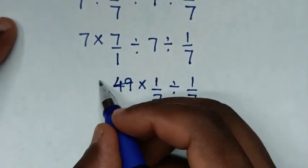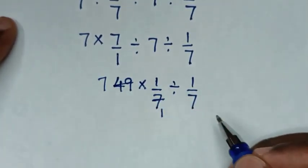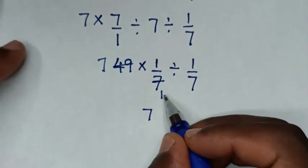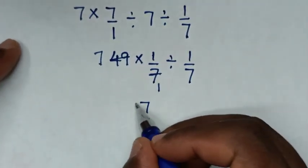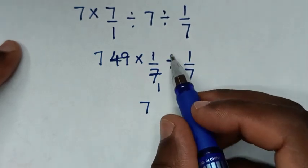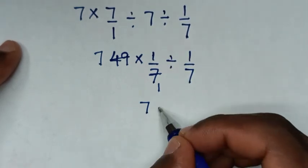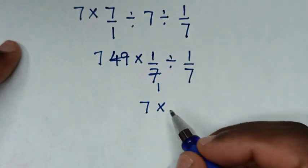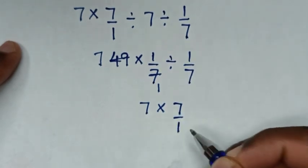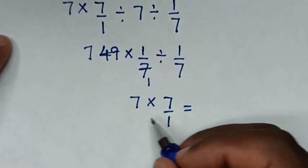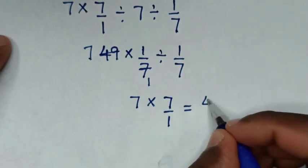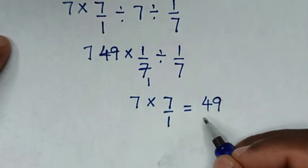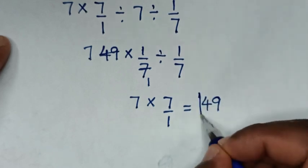To simplify, we cancel: 1 and 7 cancel, giving 7 times 1 is 7, divided by 1 is 7. Then divide by 1 over 7, which is the same as times the reciprocal 7 over 1. So 7 times 7 is 49, and 49 divided by 1 is 49. This is our final answer.